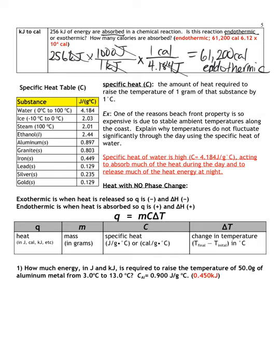To calculate heat, we need components including the change in temperature and the material's heat capacity. Specific heat capacity is that material's ability to absorb heat, and every material is different. Gold's specific heat is 0.129 J/(g·°C) — it doesn't need much energy before its temperature changes. That's why metals like gold, silver, lead, and iron change temperature quite rapidly when exposed to heat.